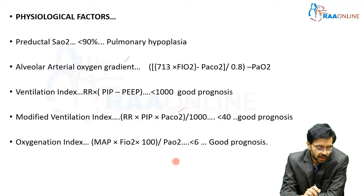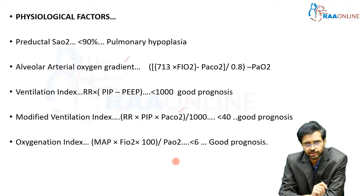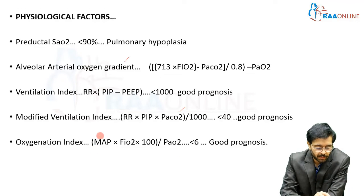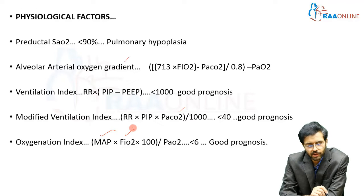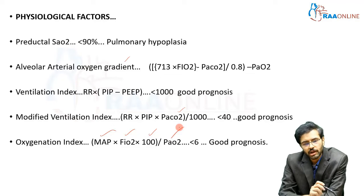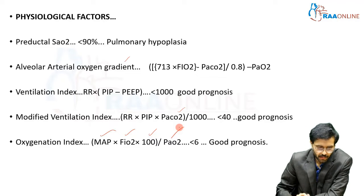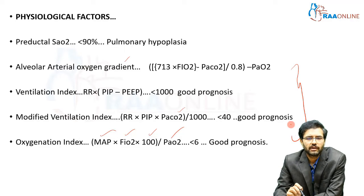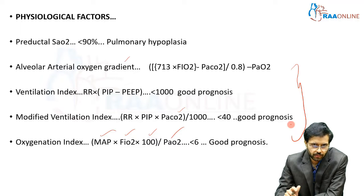The most commonly used index in practice is the oxygenation index, or OI. It is calculated by multiplying the mean airway pressure by the FiO2 requirement of the child, multiplied by 100, then divided by the partial pressure of oxygen. If the value is less than 6, it carries a good prognosis. These are the four physiological indices for determining prognosis in CDH.